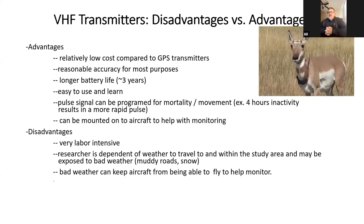VHF transmitters have several advantages. They're usually relatively low cost compared to GPS transmitters and have reasonable accuracy for most purposes. They typically have longer battery life and can be programmed to come on only during certain hours — daylight, evening, or a set number of hours — which helps extend battery life.